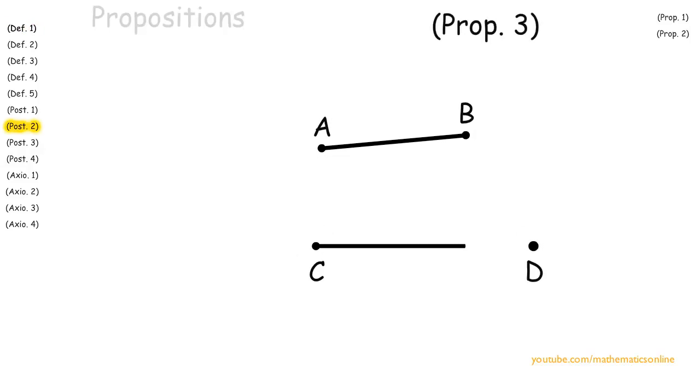Proposition 3 says that with any two unequal lines, we can always make both lines equal by creating a point on the larger line.